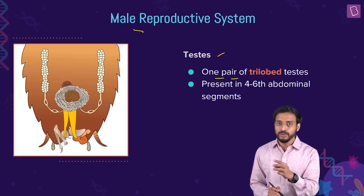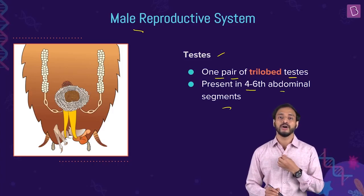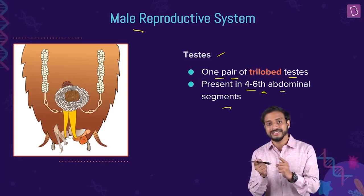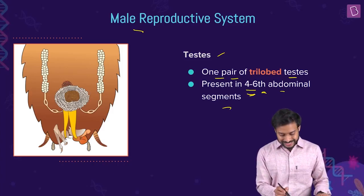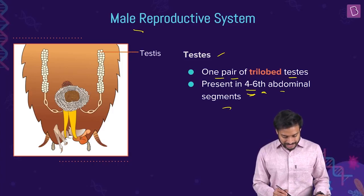The testes are trilobed — three lobes. One pair of trilobed testis is present in the fourth to the sixth abdominal segments. Note: it is fourth to the sixth, not just fourth and sixth. Here is the testis shown in the diagram.